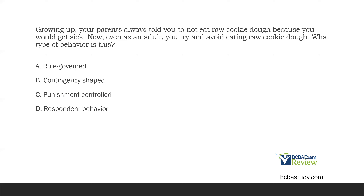It's not punishment-controlled because the punishment never actually occurred — the consequence never took place. It's all rule-governed. And it's not respondent behavior because this involves the three-term operant contingency; respondent behavior is our two-term responding contingency. So we can eliminate C and D. Our best answer is A, rule-governed.